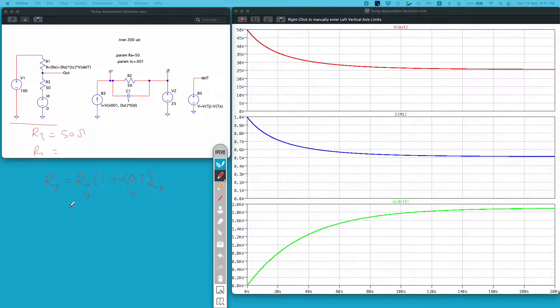R naught I have defined as Ra in this simulation and its initial value I have kept to be 50 ohm same as R3.